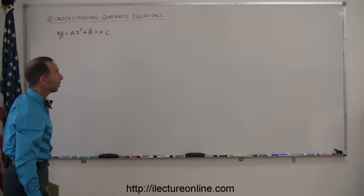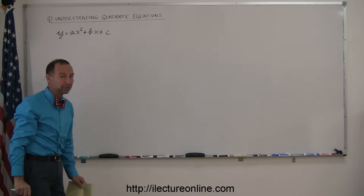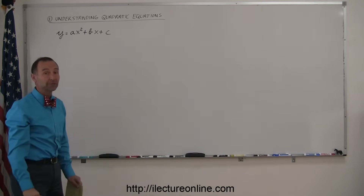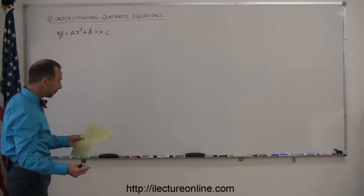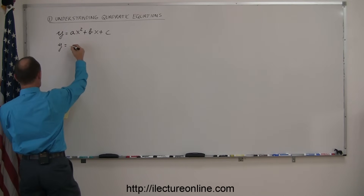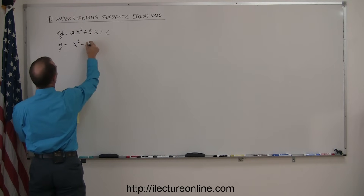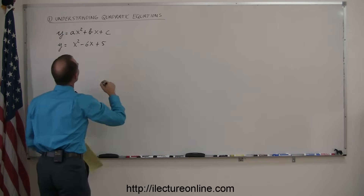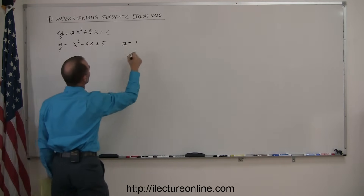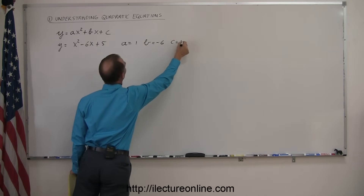That's the standard form, as we call it. A, b, and c are simple constants — any sort of numbers. X is the independent variable, and y is the dependent variable. As an example, let's write an equation such as y equals x squared minus 6x plus 5. In this case, a equals 1, b equals negative 6, and c equals 5.